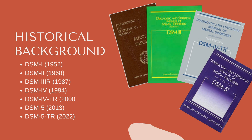The DSM-4 text revision was published in 2000, which included minor updates and text revisions. It aimed to improve clarity and consistency in diagnostic criteria, and was published to correct factual errors identified in the text and ensure all information was still accurate and up-to-date. And I'm so old — this is the one that I learned on originally.